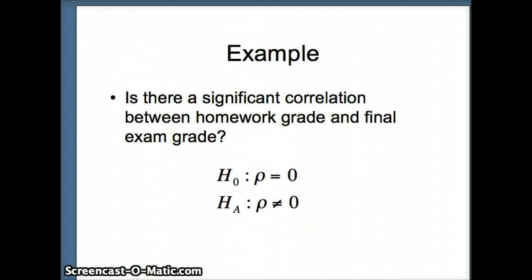So let's take a look at an example. Is there a significant correlation between homework grade and final exam grade? We're asking for a significant correlation. That means it could be positive or negative, which makes this a two-tailed test.